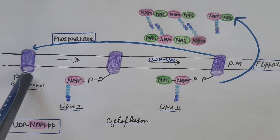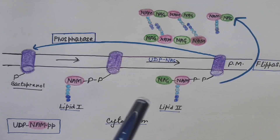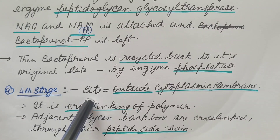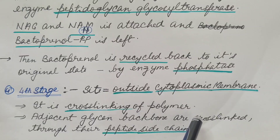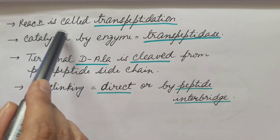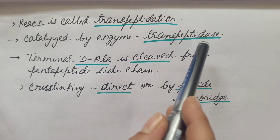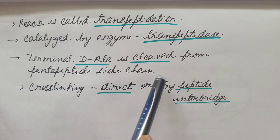If bactoprenol is not restored to its original form, the supply becomes exhausted, which would impair peptidoglycan biosynthesis. The fourth and final stage of peptidoglycan biosynthesis occurs outside the cytoplasmic membrane. It involves cross-linking of the polymer — adjacent glycan backbones are cross-linked through their peptide side chains. This cross-linking reaction is called transpeptidation, catalyzed by the enzyme transpeptidase, and the terminal D-alanine is cleaved from the pentapeptide side chain.